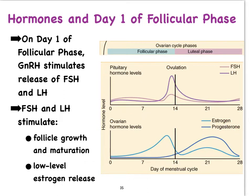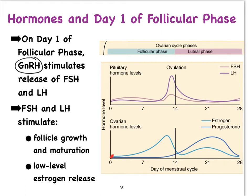We're going to add one more hormone here — one we've seen before when we studied spermatogenesis — and that is gonadotropin-releasing hormone (GnRH). This hormone is produced by the hypothalamus, and when its levels increase, it stimulates the anterior pituitary gland to secrete FSH and LH. That in turn triggers the follicles to start producing estrogen.